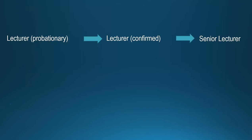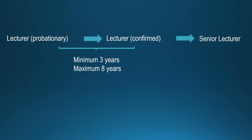When you get into the university as a lecturer probationary, after MBBS, you have to complete a postgraduate qualification relevant to your department or teaching specialty in order to become a confirmed lecturer. There is a time period given for you to get these qualifications — a minimum of three years and a maximum of eight years. If you do not get the required degree during this period, unfortunately, you have to leave the job. Such instances are somewhat rare, but it is possible.